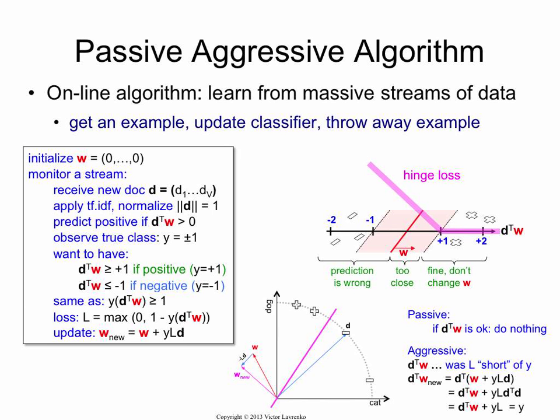Now the passive part is if the product was okay, then you didn't do anything. So it's a lazy algorithm. If it sees an example and it already classified it correctly, it was bigger than plus one, it doesn't do anything to the weight vector.